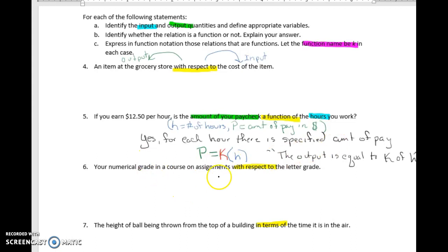Now if we look at the next one, the input comes after the words "with respect to," so our input is the letter grade. Our output is the numerical grade. We're going to write this in terms of the ordered pair, so pick a reasonable letter. You do L equals the letter grade.